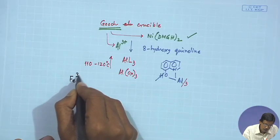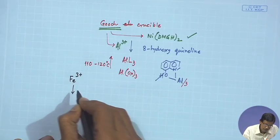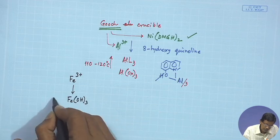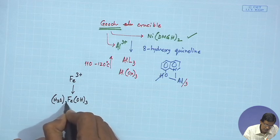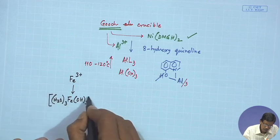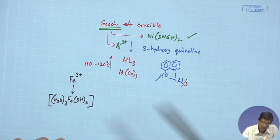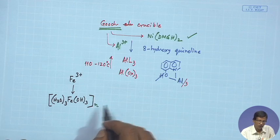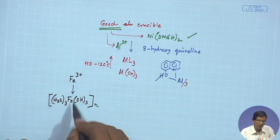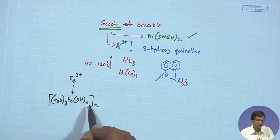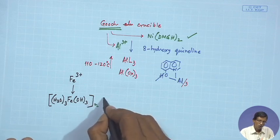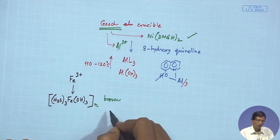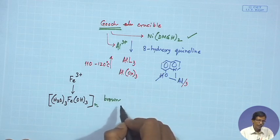Fe³⁺ is precipitated as ferric hydroxide — it is wise to write this in its polymeric form. This ferric hydroxide is essentially a three-dimensional polymeric network because the hydroxide groups are bridging more than one iron center; it is not a monomeric structure. This yellow-brown, fluffy, voluminous material is obtained in the beaker.